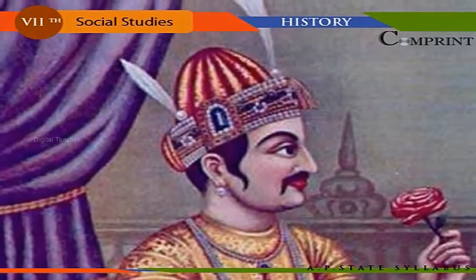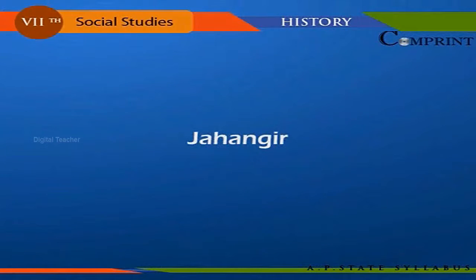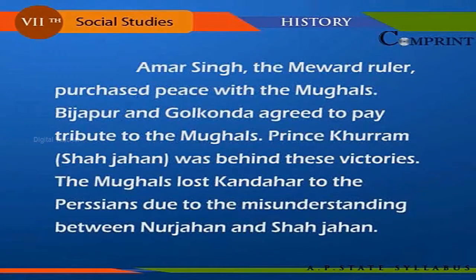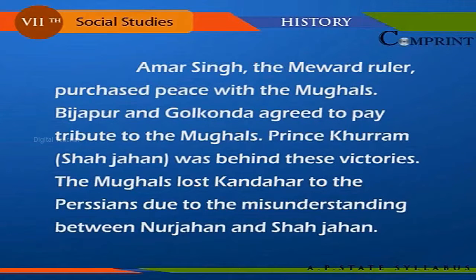Jahangir. Jahangir ruled the Mughal Empire from 1605 to 1627. As soon as he came to the throne, a number of ordinances were declared by him, which were useful to his subjects. Amar Singh, the Mewar ruler, purchased peace with the Mughals. Bijapur and Golconda agreed to pay tribute to the Mughals. Prince Kurram, Shah Jahan, was behind all these victories. The Mughals lost Kandahar to the Persians due to the misunderstanding between Nur Jahan and Shah Jahan.